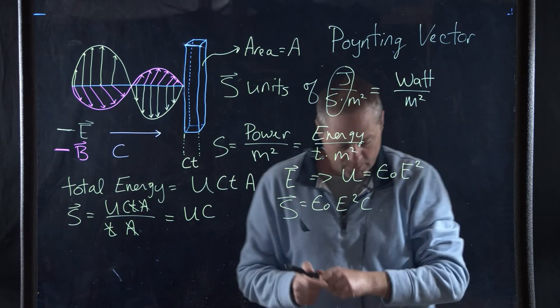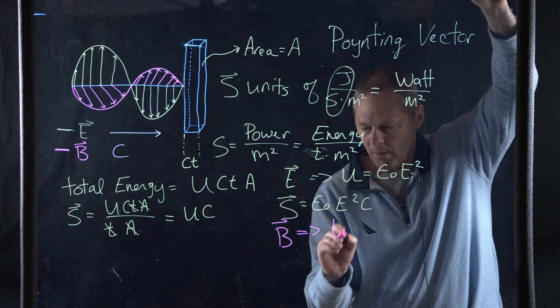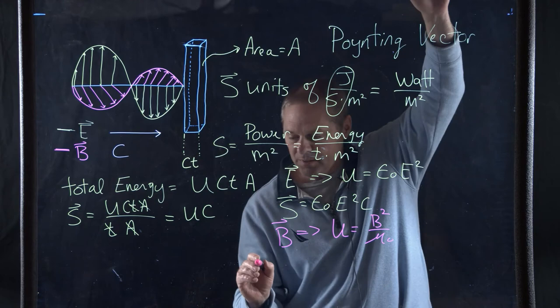If we're going to look at it for the magnetic field, for the magnetic field, now recall from the other video, our energy of the magnetic field is B squared upon mu naught. Therefore,